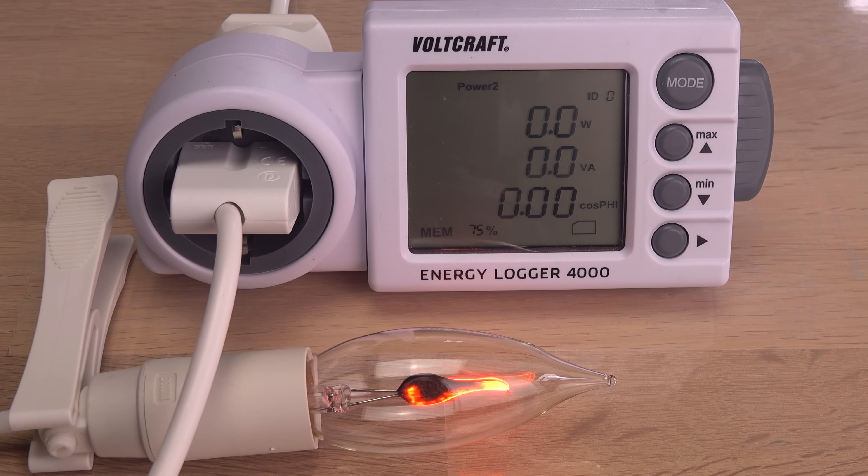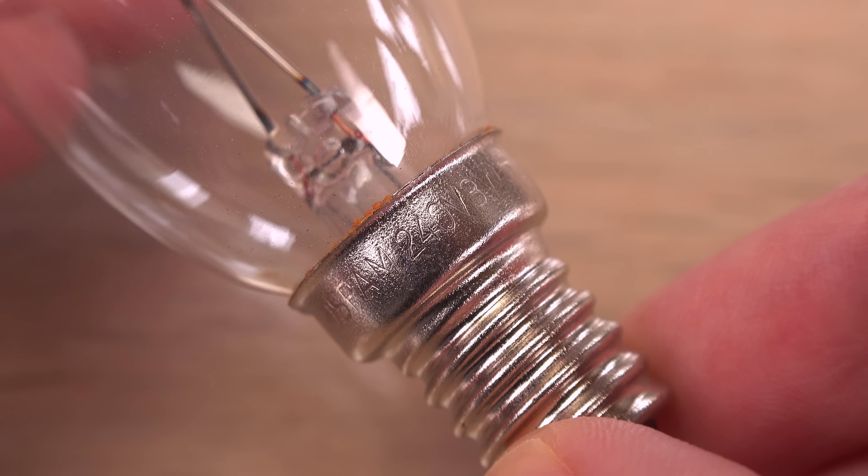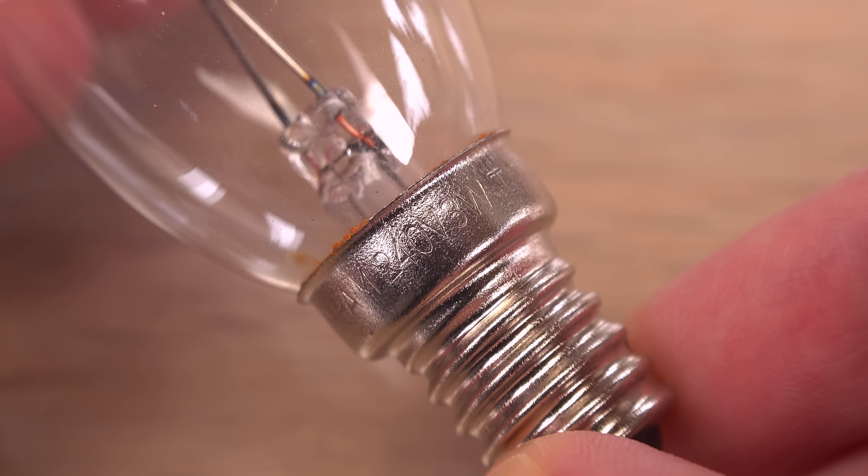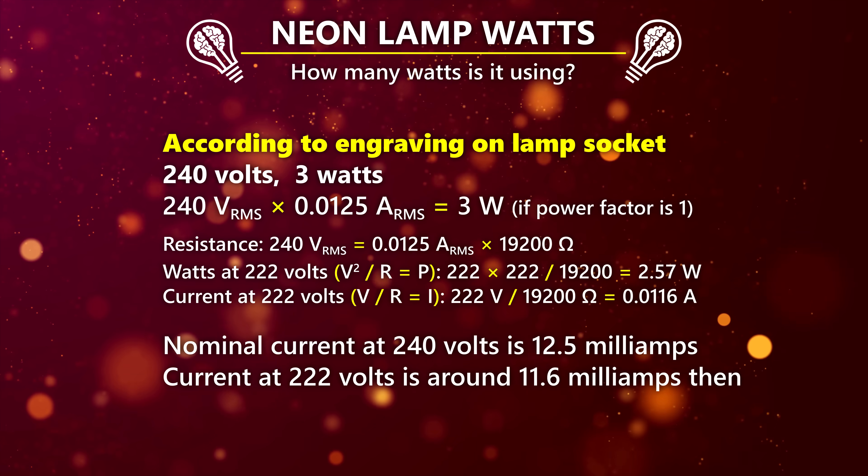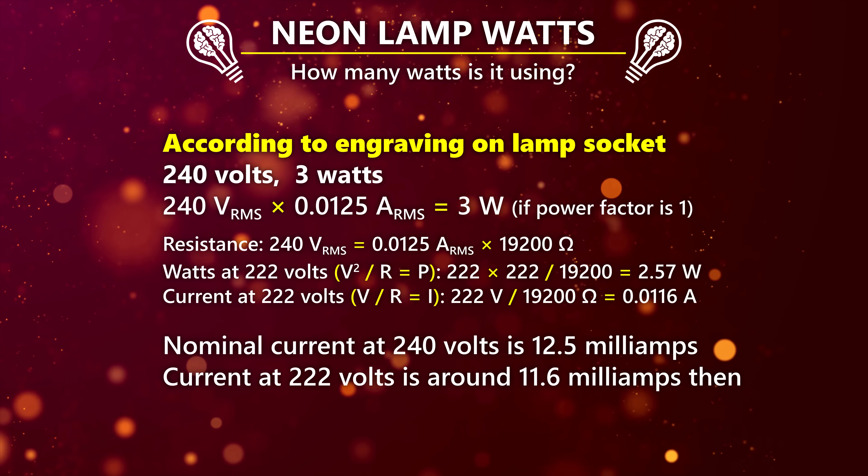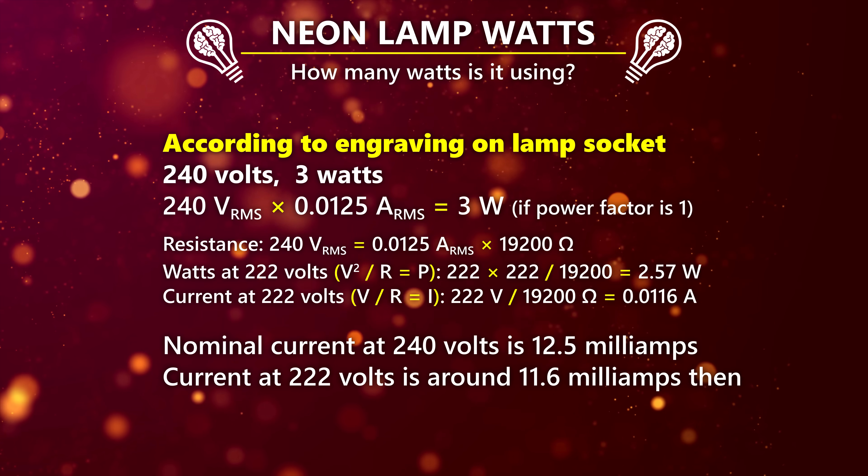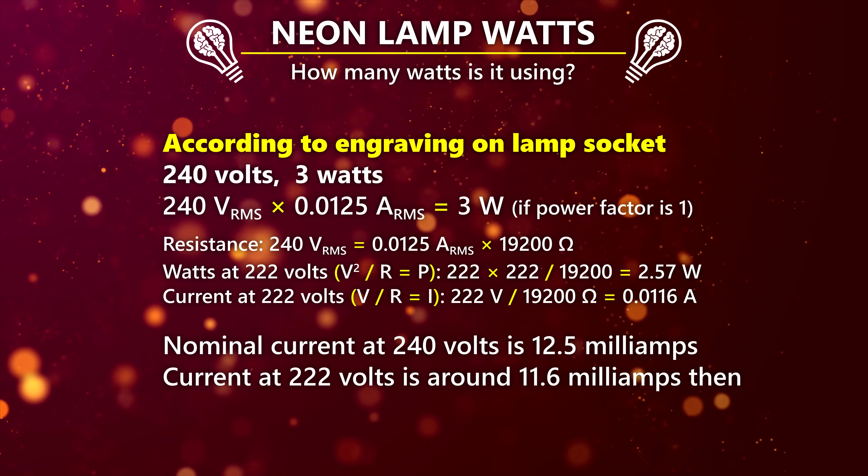These lamps actually have a resistor in series, hidden in their socket, making sure the current is kept really low. Too much current would turn the discharge into an arc, a spark. Okay. The low current explains why it isn't all of the electrical surface that is lit up.